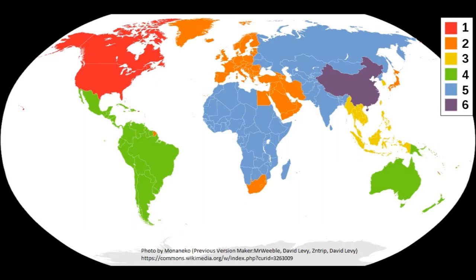Region 3 includes Southeast Asia, South Korea, Taiwan, Hong Kong, and so on. Region 4 includes Latin America and Oceania. Region 5 includes Africa, Russia, Central Asia, South Asia, Mongolia, and North Korea. And finally, Region 6 is mainland China.